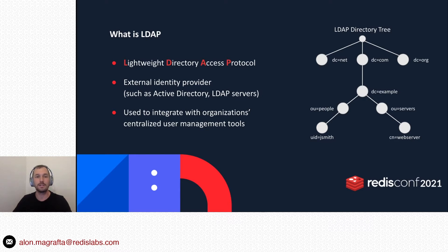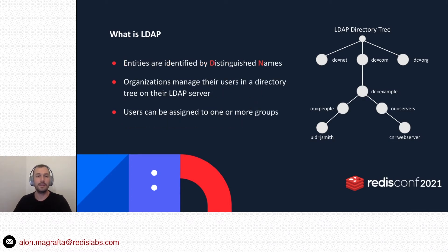It is used to provide an easy integration with an organization's user management tools. It allows companies to centralize the management workflows like new hires, role changes, and employee separation. Entities in LDAP are managed at the organization directory tree. It can be a simple structure or a very complex one. Each entity is identified by its distinguished name. Users and groups are two main entities we will focus on. Users can be associated with one or more groups.